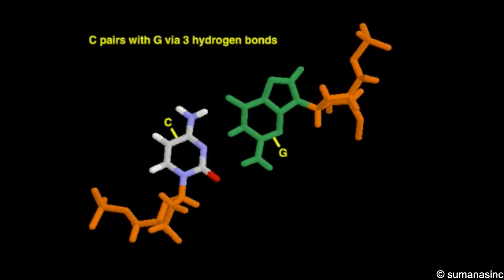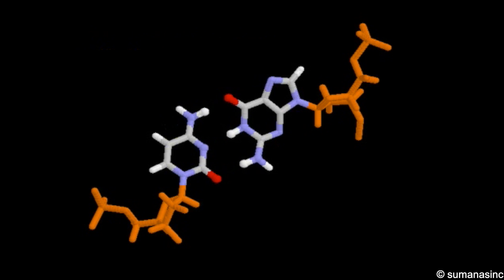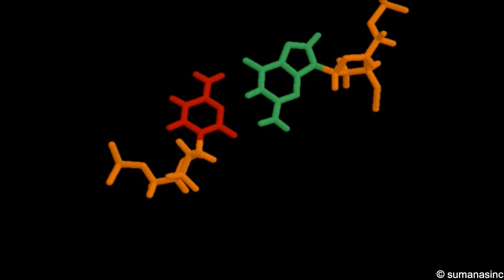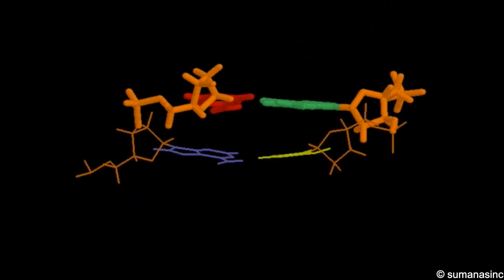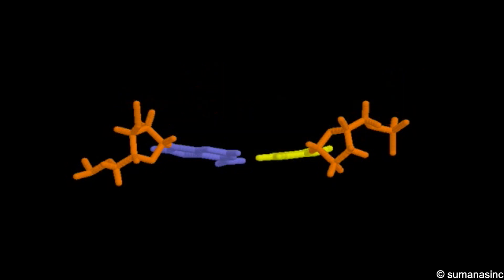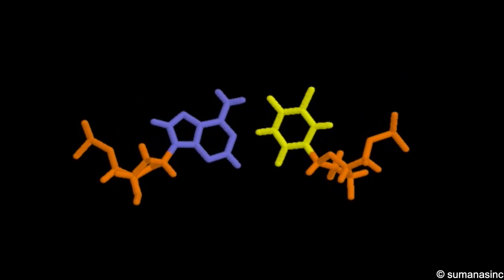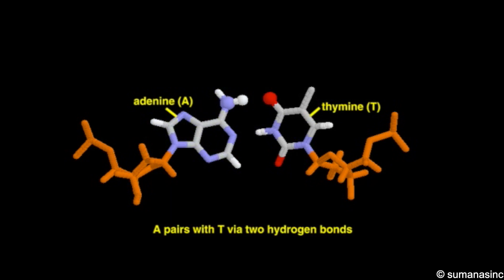A GC pair is stabilized by three hydrogen bonds formed between amino and carbonyl groups that project from the bases. In contrast, an AT pair is stabilized by two hydrogen bonds.